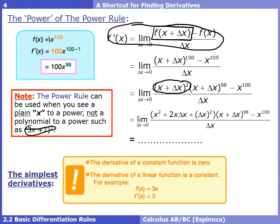Let's look at some of the simplest derivatives. The derivative of a constant function is zero — we saw that already. The derivative of a linear function is a constant. For example, f of x equals 3x has derivative 3. Remember, this is in the form y equals mx plus b, and the slope m is 3. So the derivative of 3x is 3, of 4x is 4, and so on.